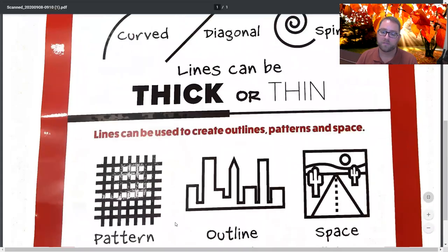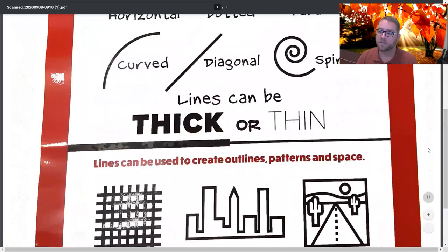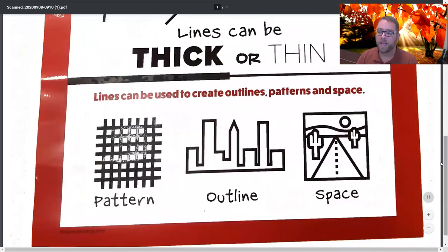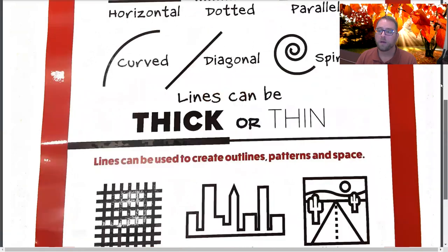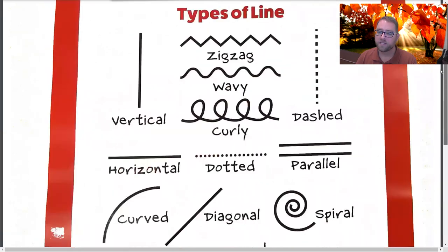Patterns like this, outlines like a city skyline, and to give the illusion or the feel of space — and we don't mean outer space. We mean things that are closer to you and things that are further away. You can create that right on your paper with the use of line. So different kinds of lines.